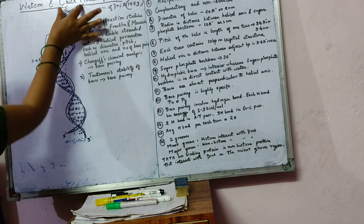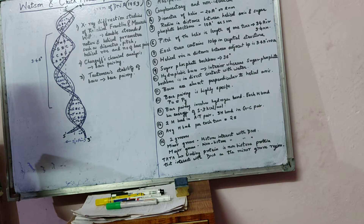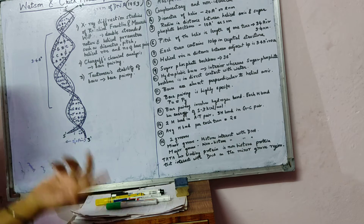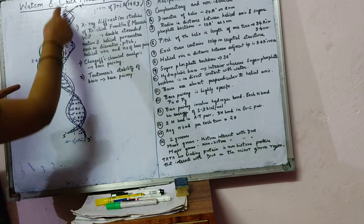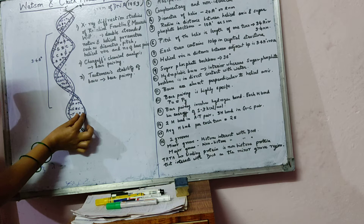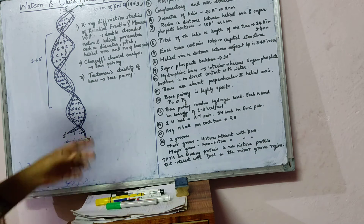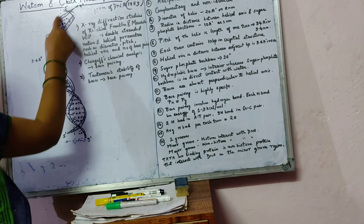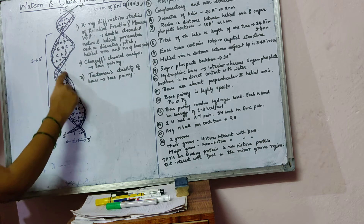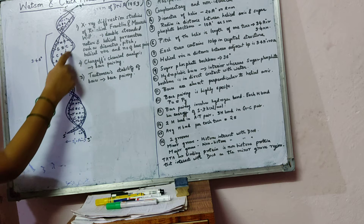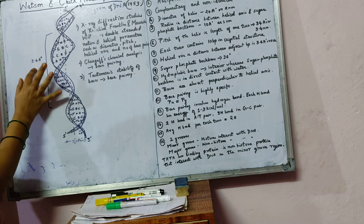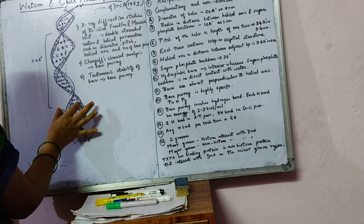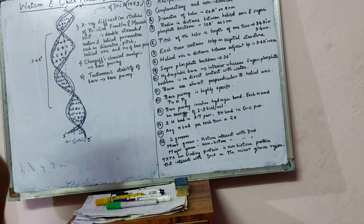The diameter of the helix is 20 angstroms, which is 2 nanometers. The radius — the distance between the helical axis and the sugar-phosphate backbone — is 10 angstroms or 1 nanometer. The length of one turn, also called the pitch of the helix, is 34 angstroms or 3.4 nanometers.